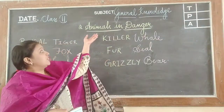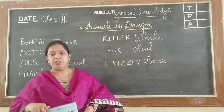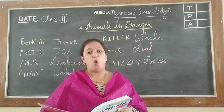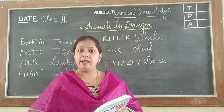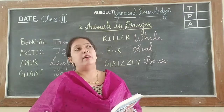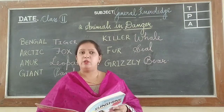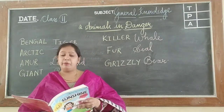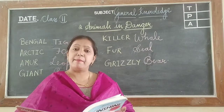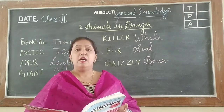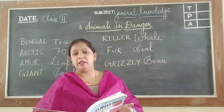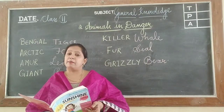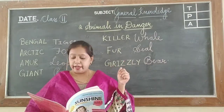Let us move to the next lesson — Animals in Danger. Man has been killing animals for his own use. We use the skin of animals to make leather, and with leather we make shoes, bags, etc. We also use some animals for medicinal purposes. So, some animals are becoming fewer in number — that is called animals in danger.